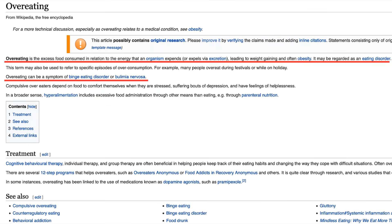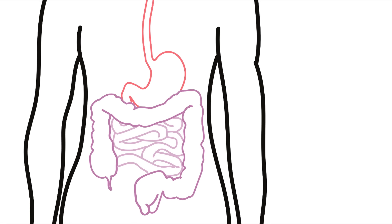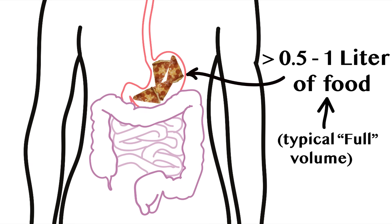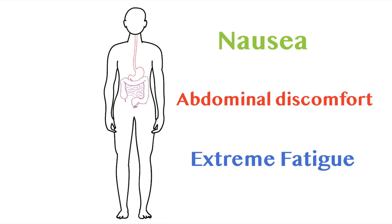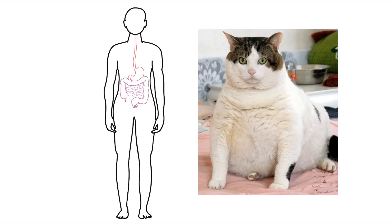How about a definition that's less clinical? Relative to physical manifestations, overeating is defined as consuming a volume of food that is more than one liter, which is the fill volume for the stomach. More specifically, if after a meal you have nausea, abdominal discomfort, and extreme fatigue, you've probably overeaten.